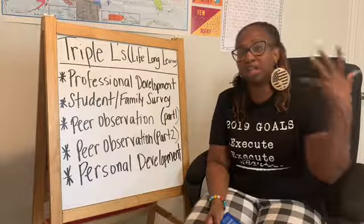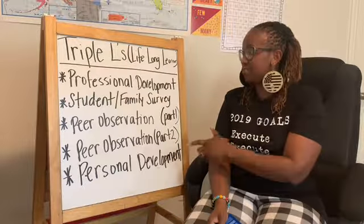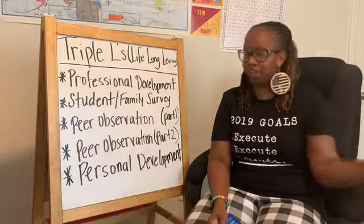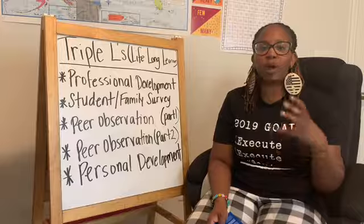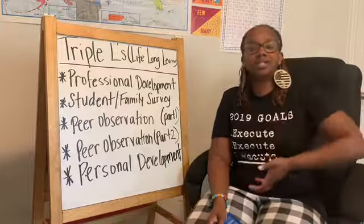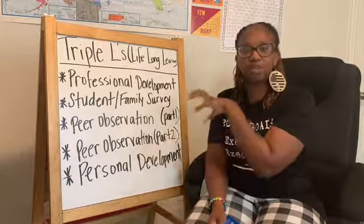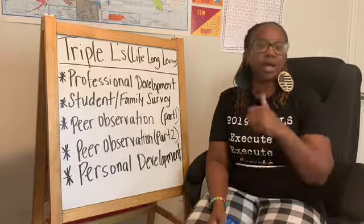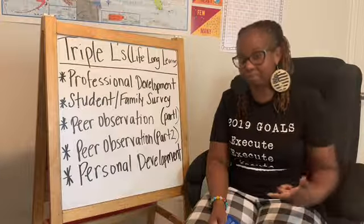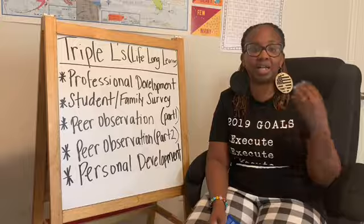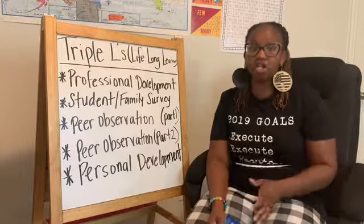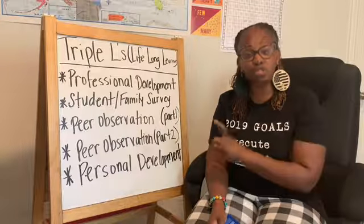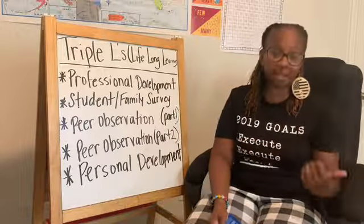Tip number three: peer observation, part one. I want you to take yourself out of the classroom, put yourself in someone else's classroom, take notes on things you need to work on, and go back and implement them. When I first started teaching, I struggled with classroom management, so I went to Miss Johnson's class — my mentor — observed what she did, and implemented it into my classroom.